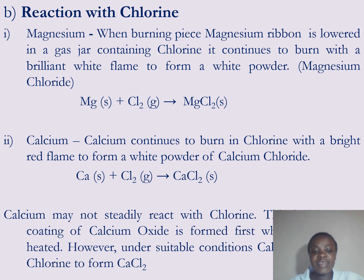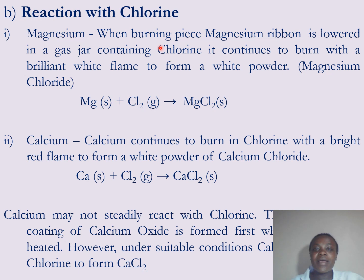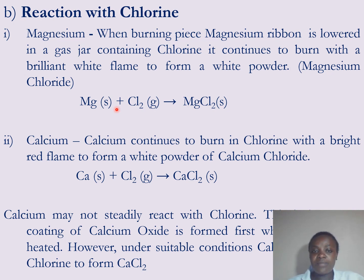The second chemical property is reaction with chlorine, starting with magnesium. When a burning piece of magnesium ribbon is lowered into a gas jar containing chlorine, it continues to burn with a brilliant white flame to form a white powder. This white powder is magnesium chloride. The chemical equation is: magnesium plus chlorine to give magnesium chloride, which is a solid.